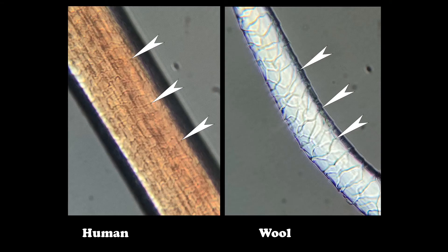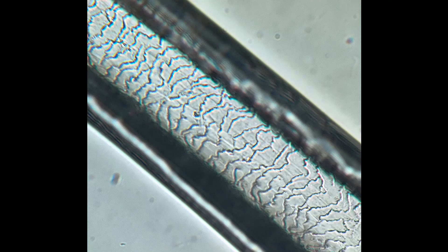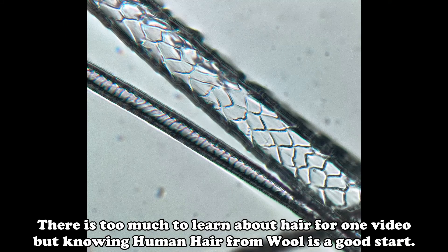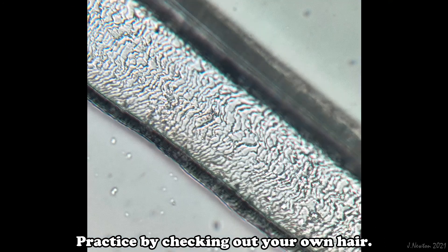Here you can see the difference between the imbricate scale pattern of human hair and the mosaic scale pattern of wool. There is a better way to see this scale pattern in greater relief with simple, clear nail polish. Check out the video on hair scale pattern preparation for more details.